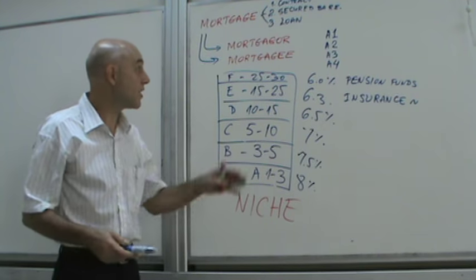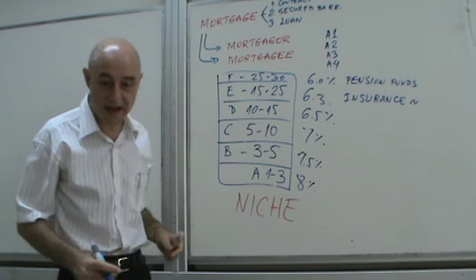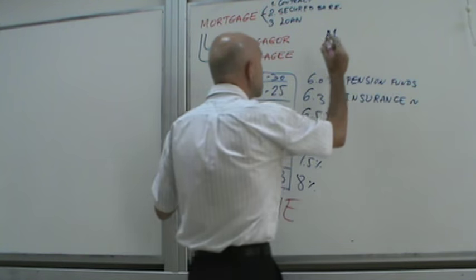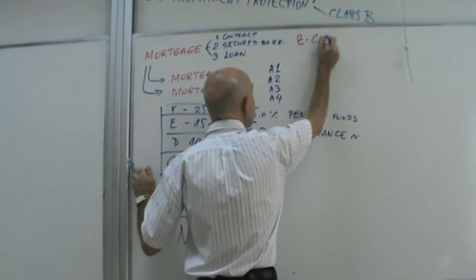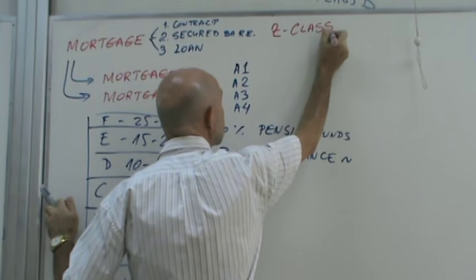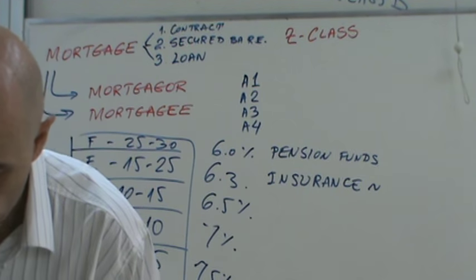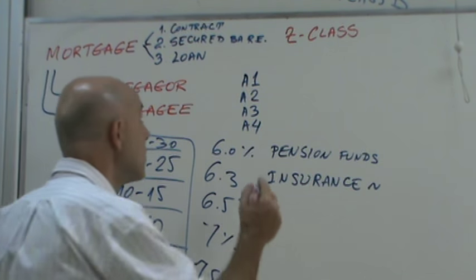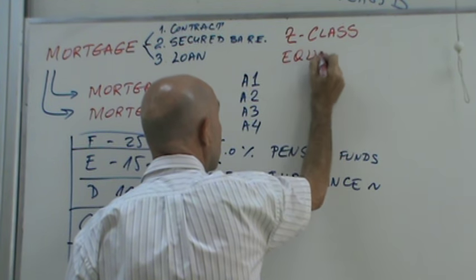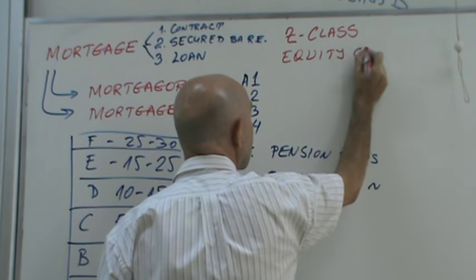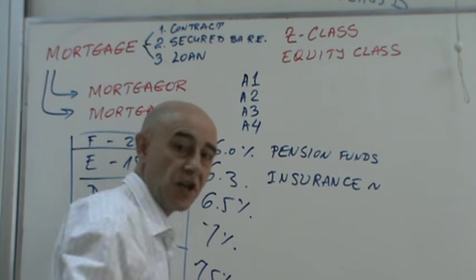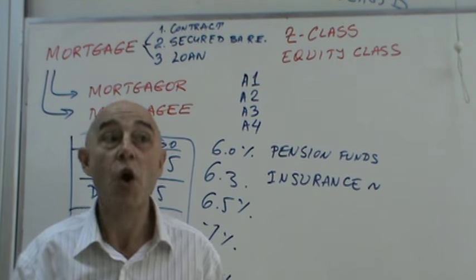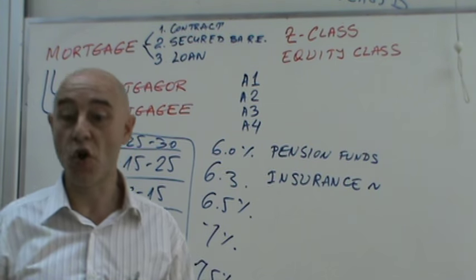Things can get more complicated. Beyond all the regular classes, there is one very special class called the Z class, occasionally known as the equity class. Equity here means residual — whatever is left over.